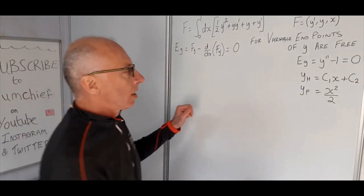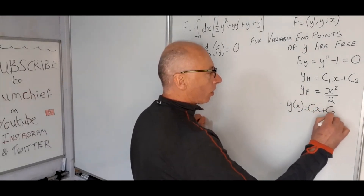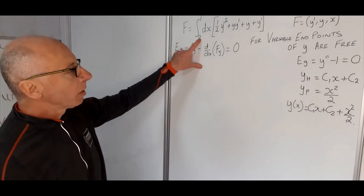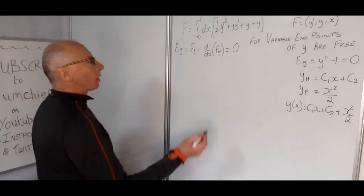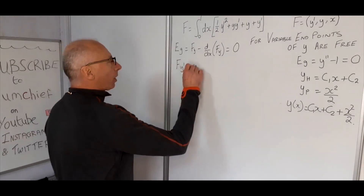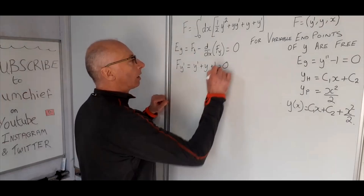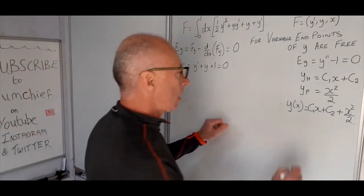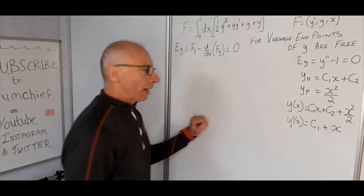We've got our homogeneous and particular solutions, so now we have y(x) = c1·x + c2 + x²/2. Now we're ready to plug in our values at x = 0 and x = 1 for the partial derivative with regards to y prime. We previously found that ∂F/∂y' equals y prime + y + 1, and we want to know when that equals 0 — that's when the functional is stationary. So we also need y prime of x, which is c1 + x.